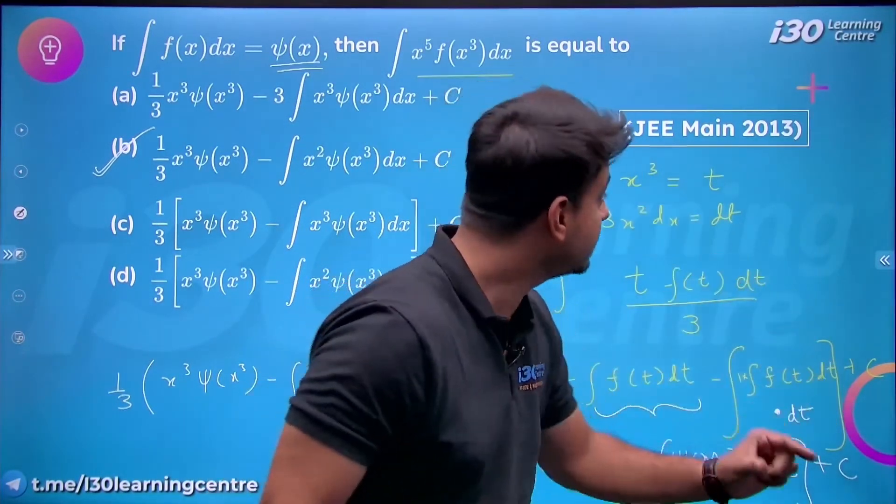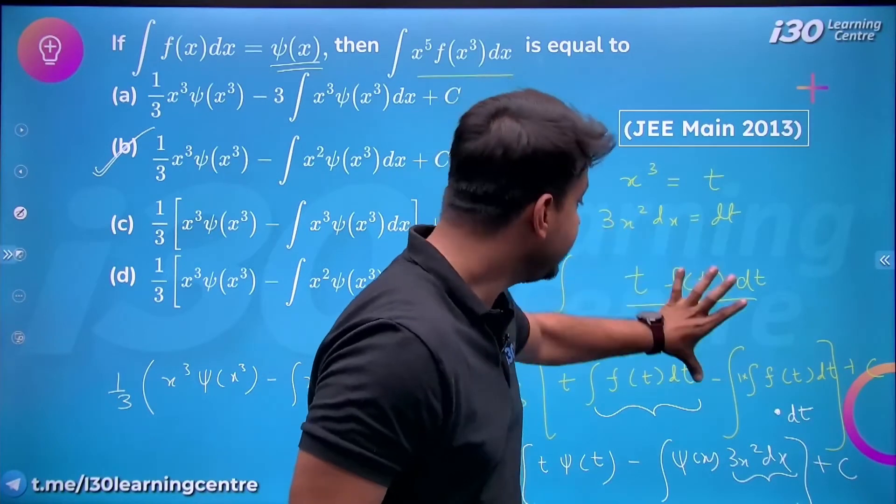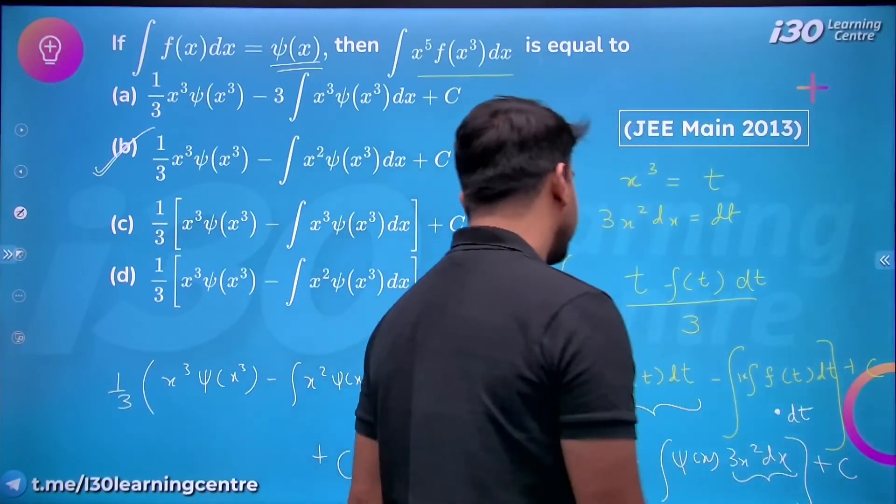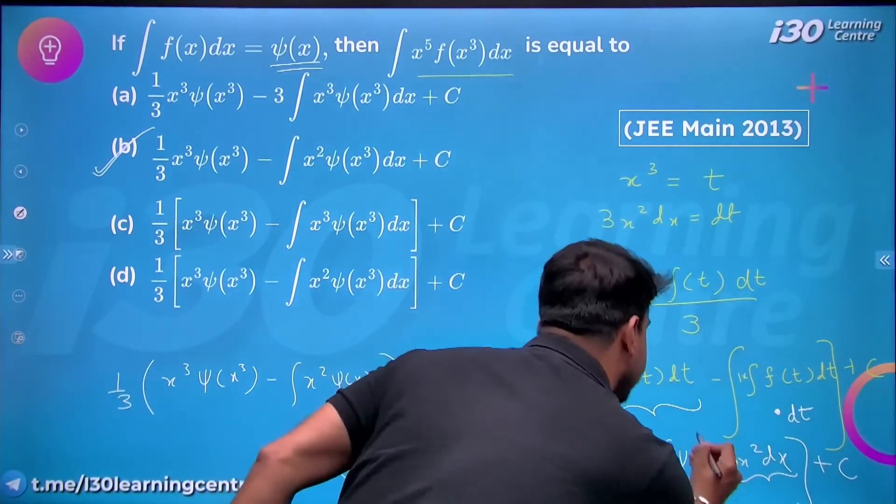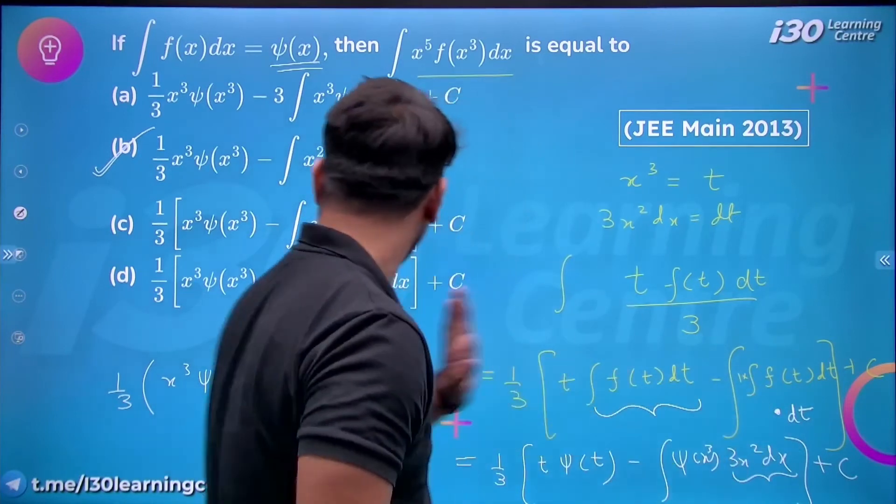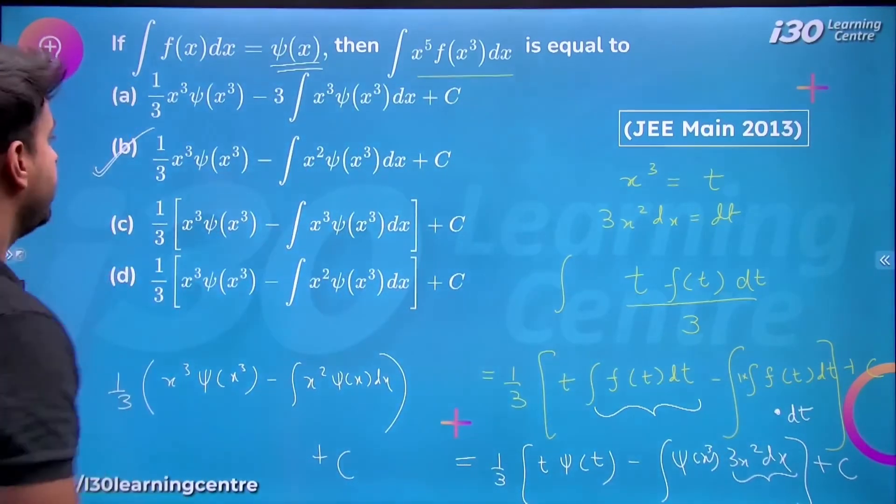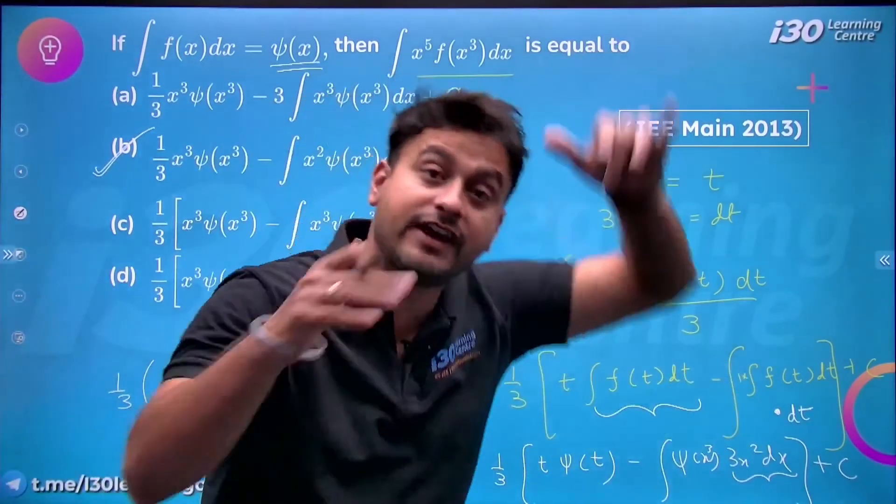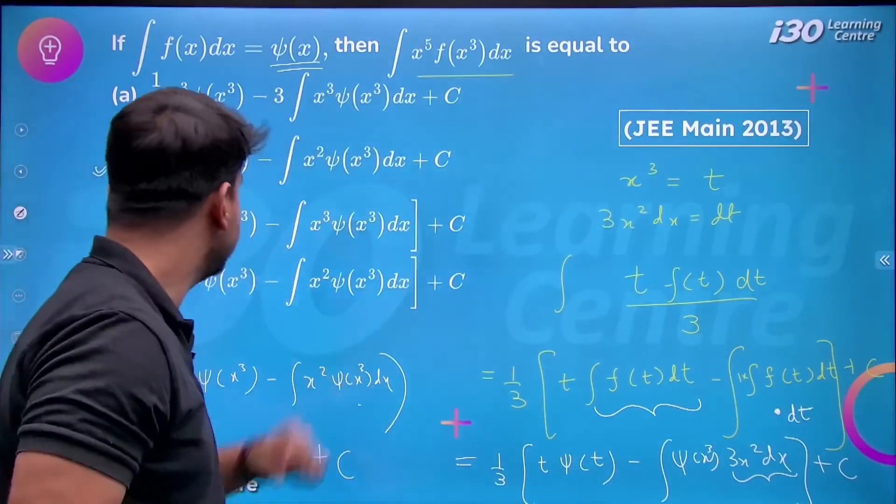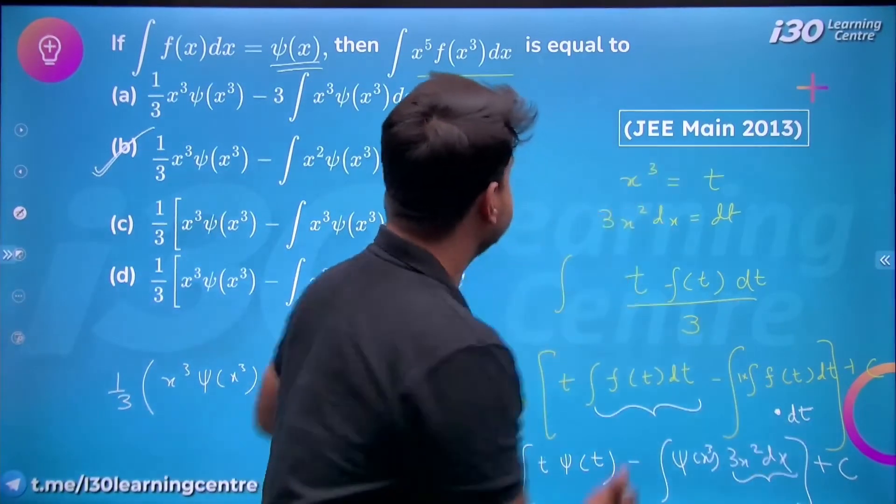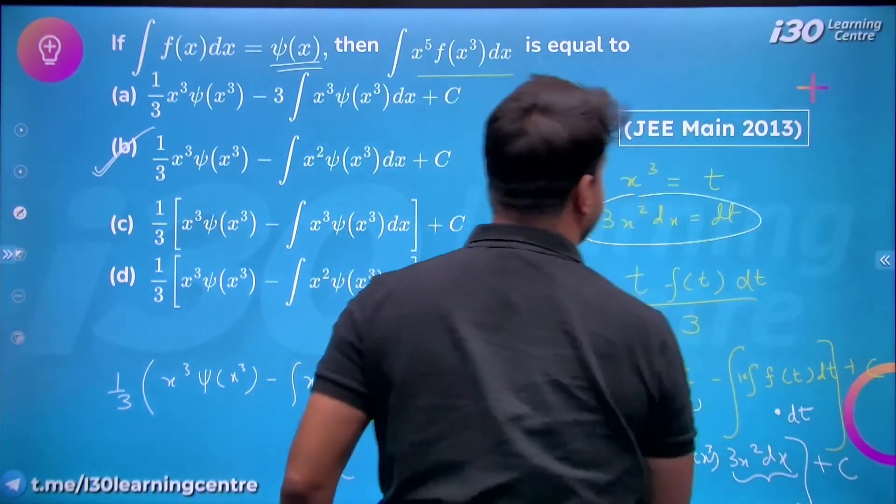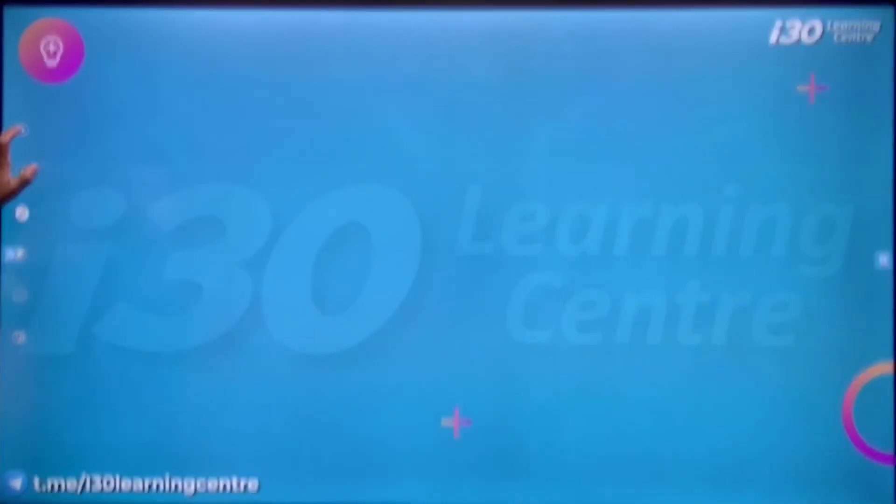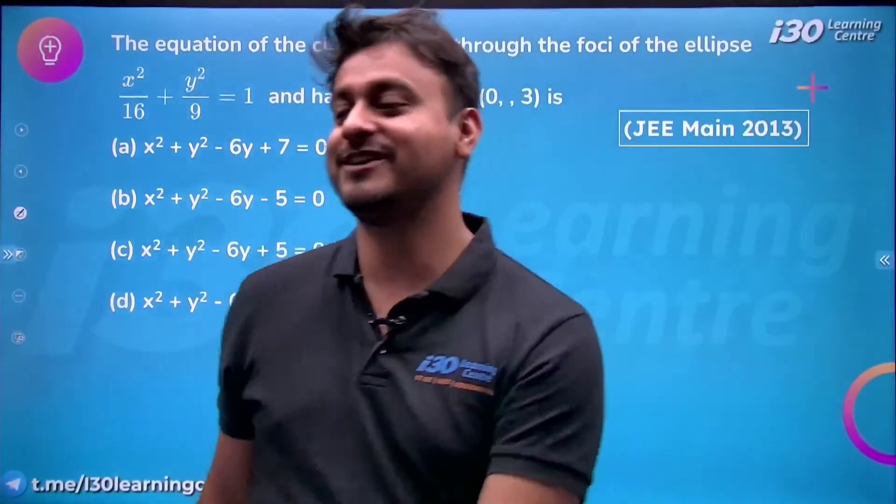Finally I'll substitute t with x³ and ψ(t) becomes ψ(x³). So finally I get 1/3[x³·ψ(x³) - when I multiply, 3 and 3 cancel, I get ∫x²·ψ(x)dx]. This will be my final answer plus C. So I'm getting option B. Yes, option B is correct. This part was a bit tricky. Students often miss dt. I told you this later so you remember that here the integration is in terms of t, so dt must come. That's very important and students often miss this.